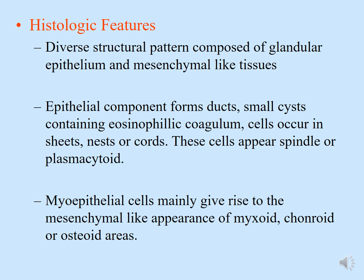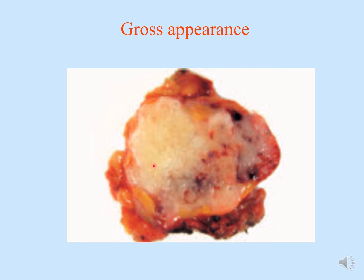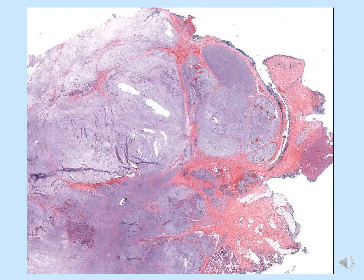The gross appearance of an excised pleomorphic adenoma shows a whitish area representing the mesenchymal component, with the rest being a mix of epithelial and mesenchymal components. The surrounding part is the capsule — it is a very well-encapsulated benign tumor not fixed to underlying structures. On the histopathological slide, a fibrous capsule is visible, with normal parotid gland at the 5 o'clock position and the tumor mass within.